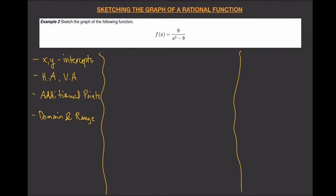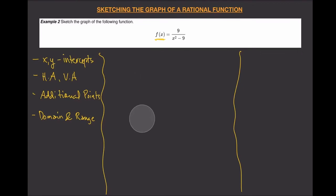Let's start with the x-intercept. To find it, you equate y equals zero. So set nine over x squared minus nine equal to zero. Multiplying both sides by x squared minus nine gives nine equals zero, which is wrong. That means there is no x-intercept — no part of the graph will hit or intersect the x-axis.